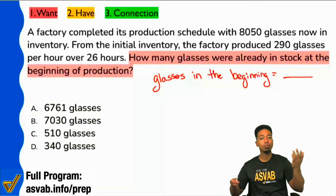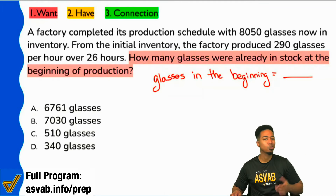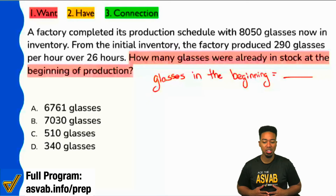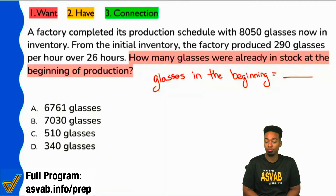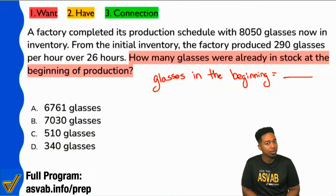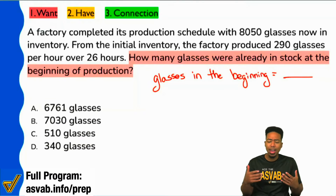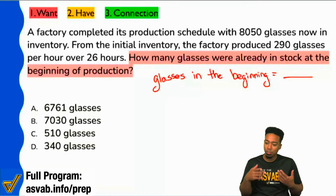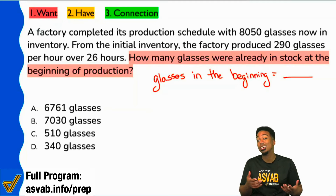Everybody, first step — are we in agreement? We're looking for the amount of glasses that were there in the beginning. So the next step is taking a natural look at the information we have and carefully processing it, giving ourselves the best chance to get this done.